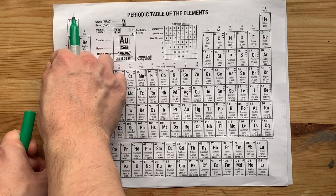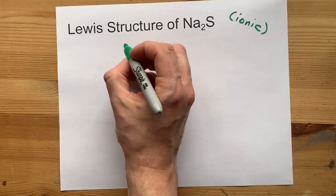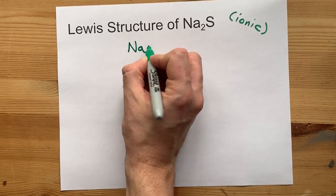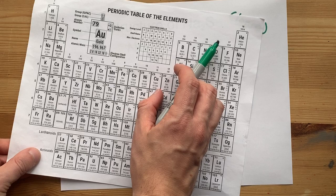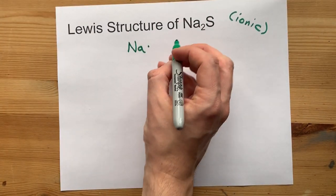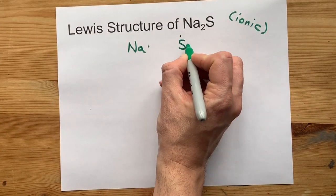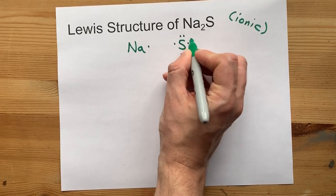Na, in group 1, brings one valence electron with it. Sulfur, in group 16, brings six valence electrons with itself. Two, three, four, five, six.